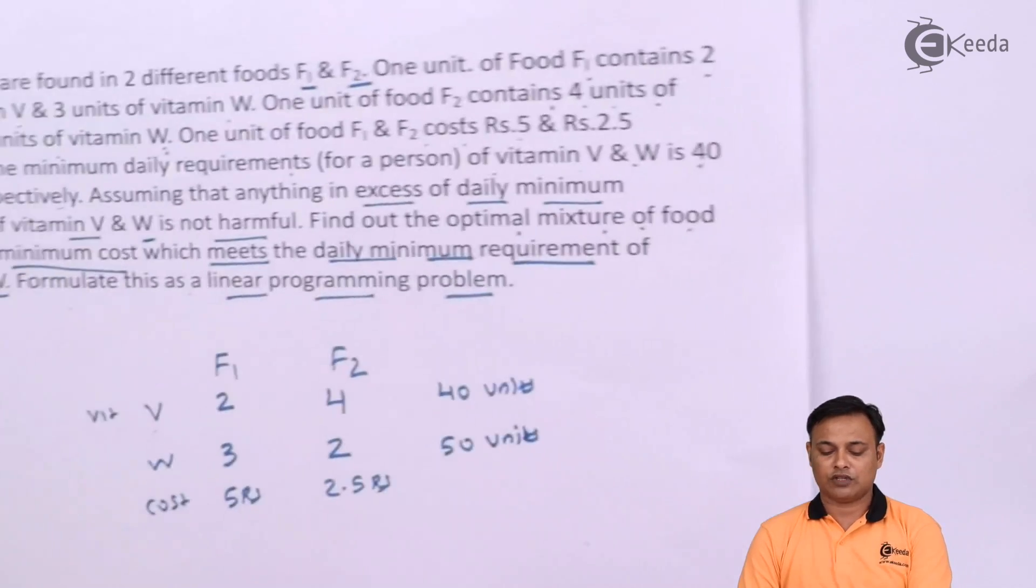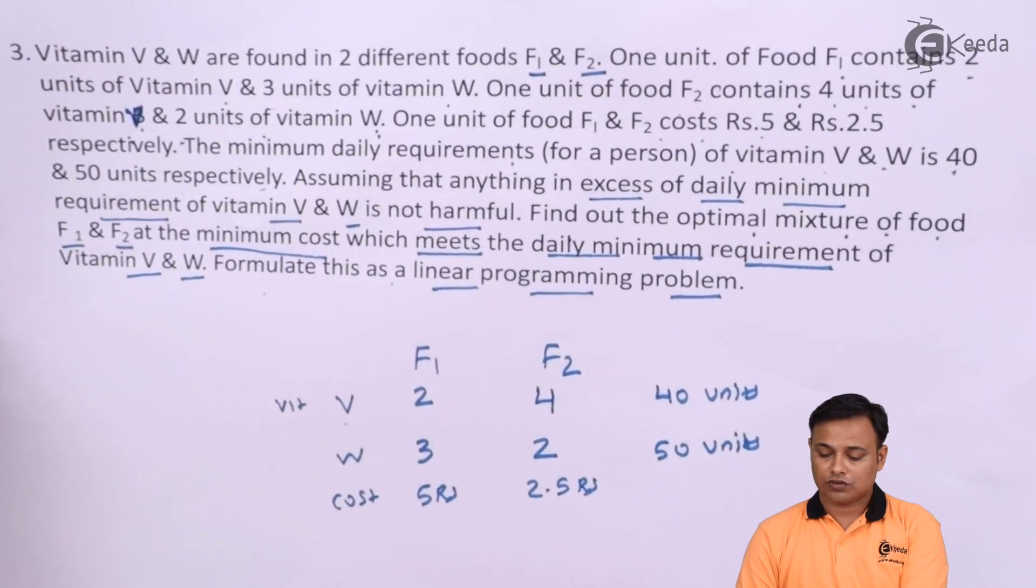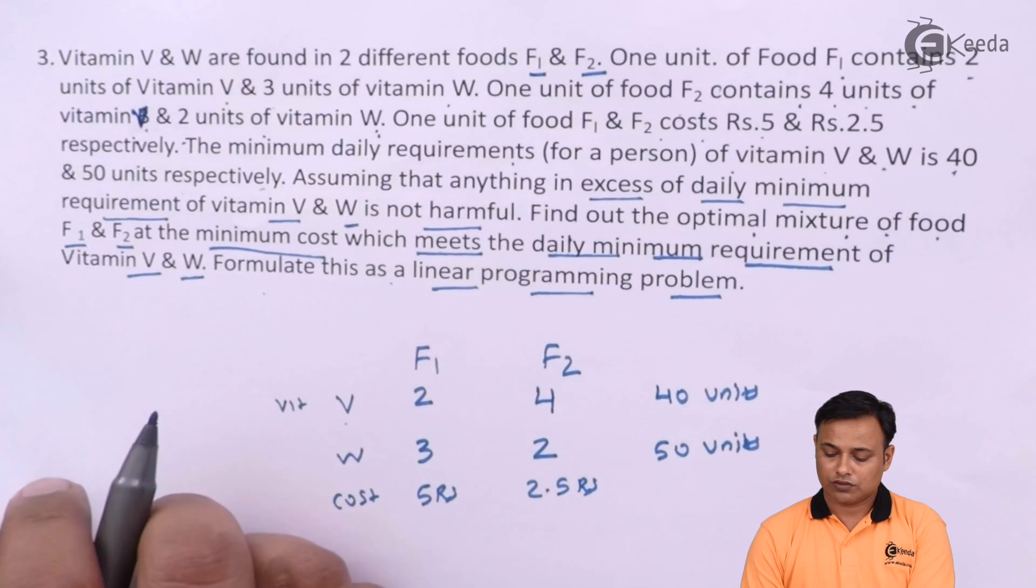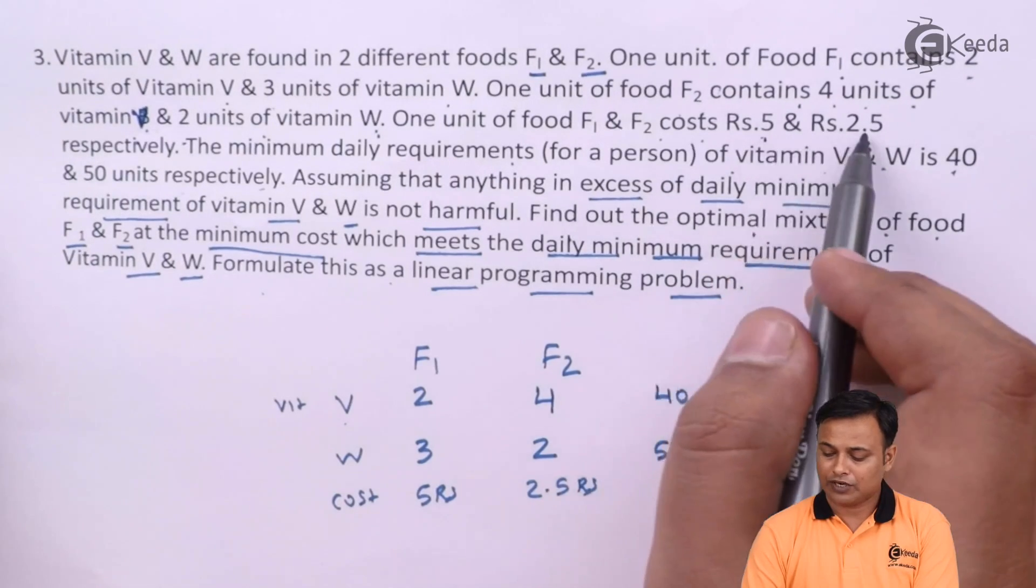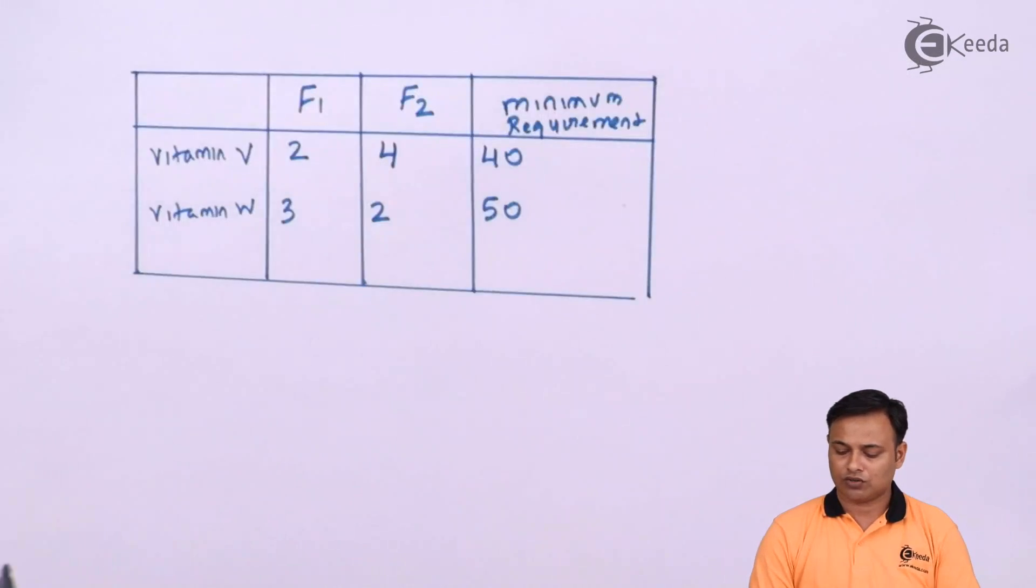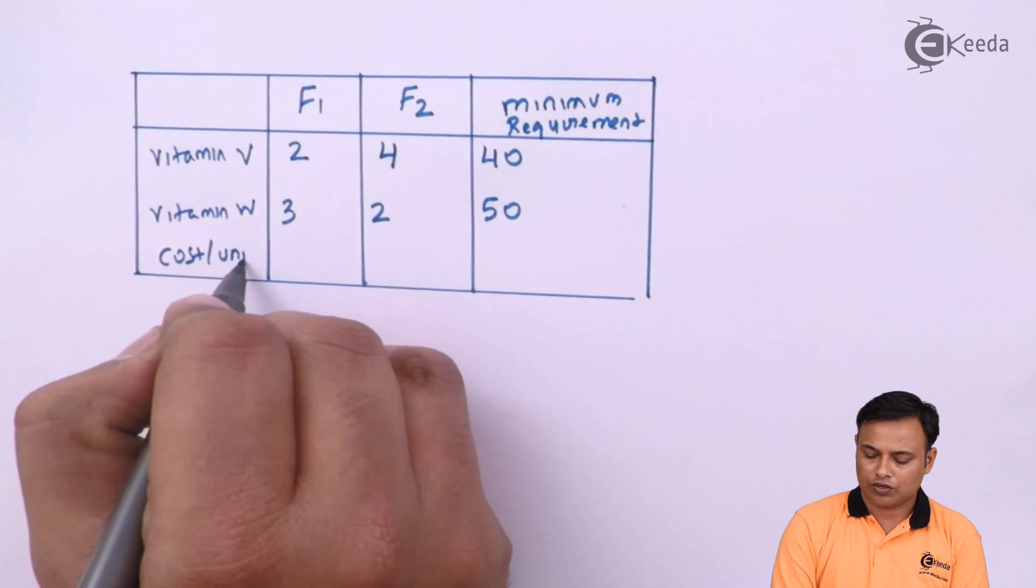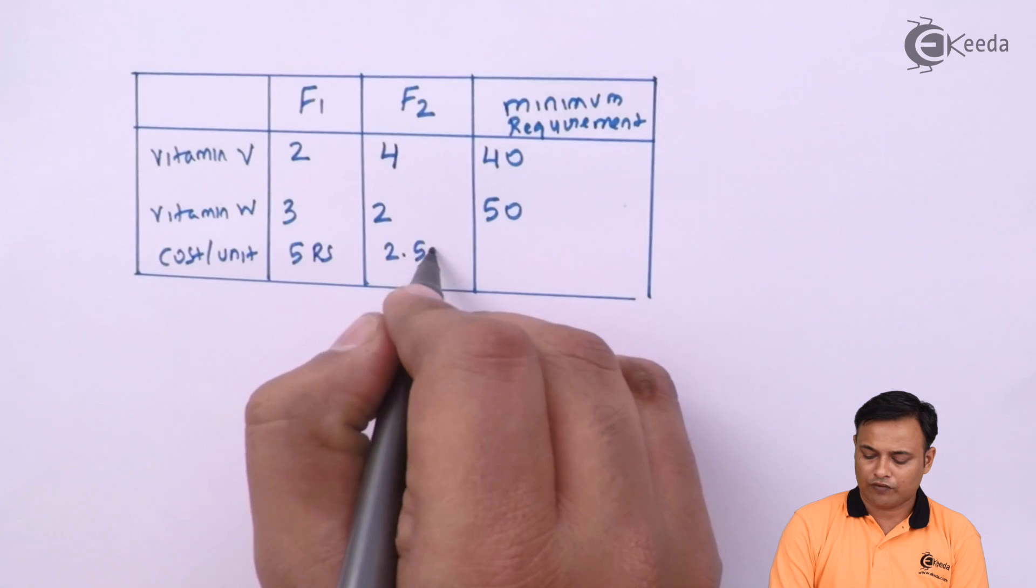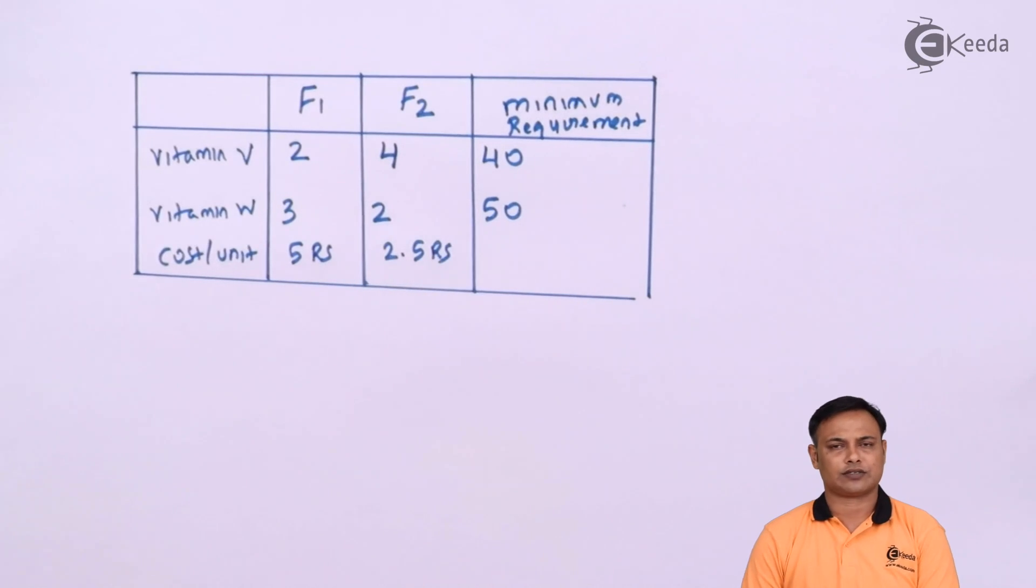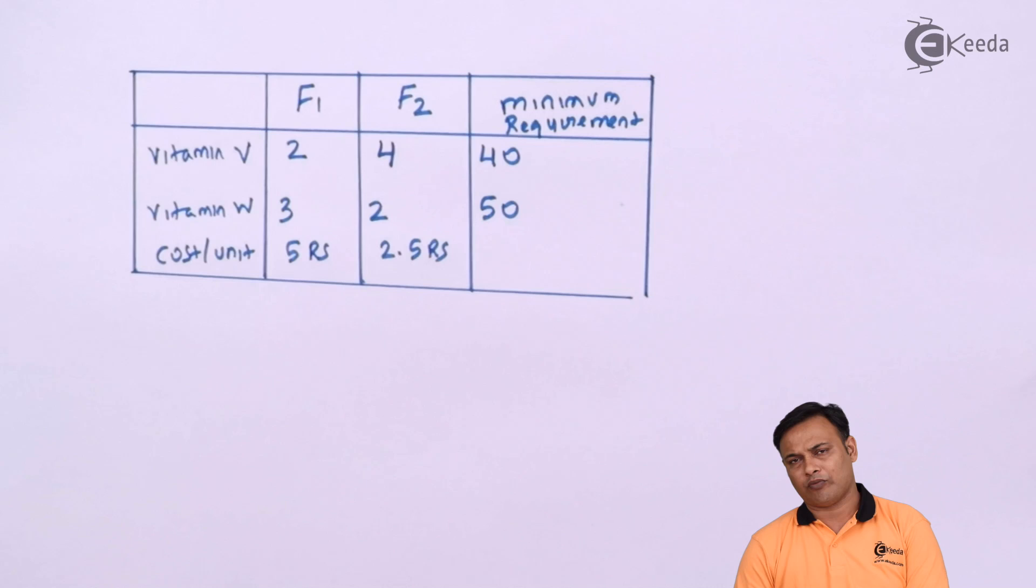We are also given the cost. The cost was 5 rupees and 2.5 rupees per unit. Cost per unit 5 rupees and 2.5 rupees and that's it. We have converted the problem into a tabular format. We have made it table.